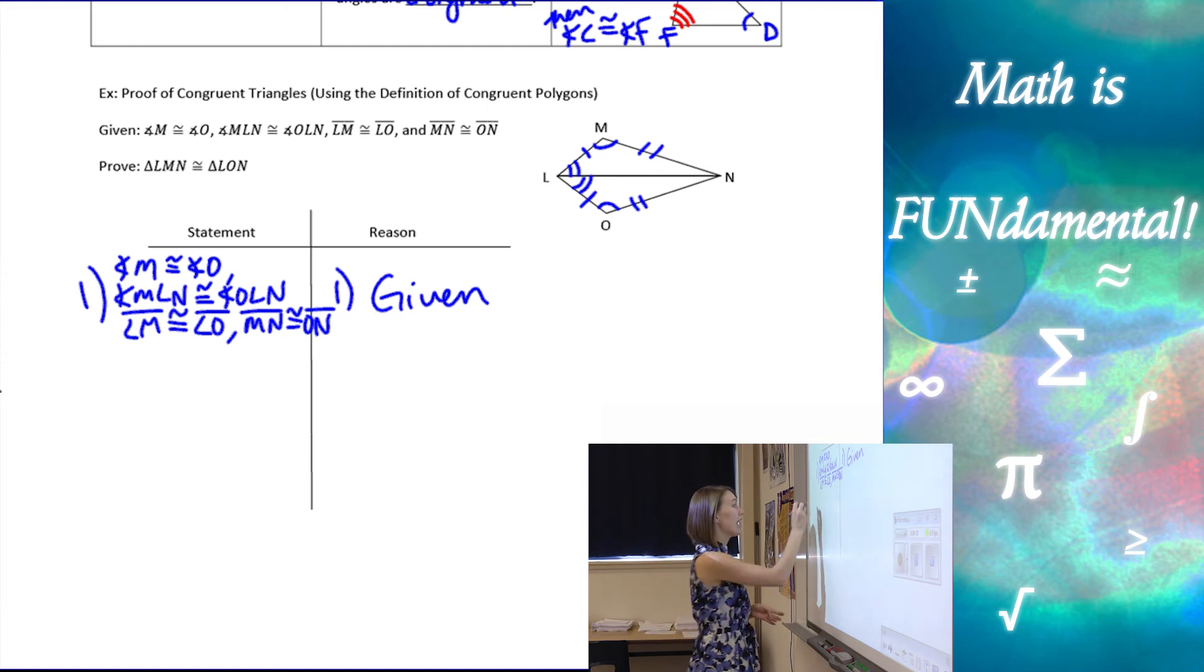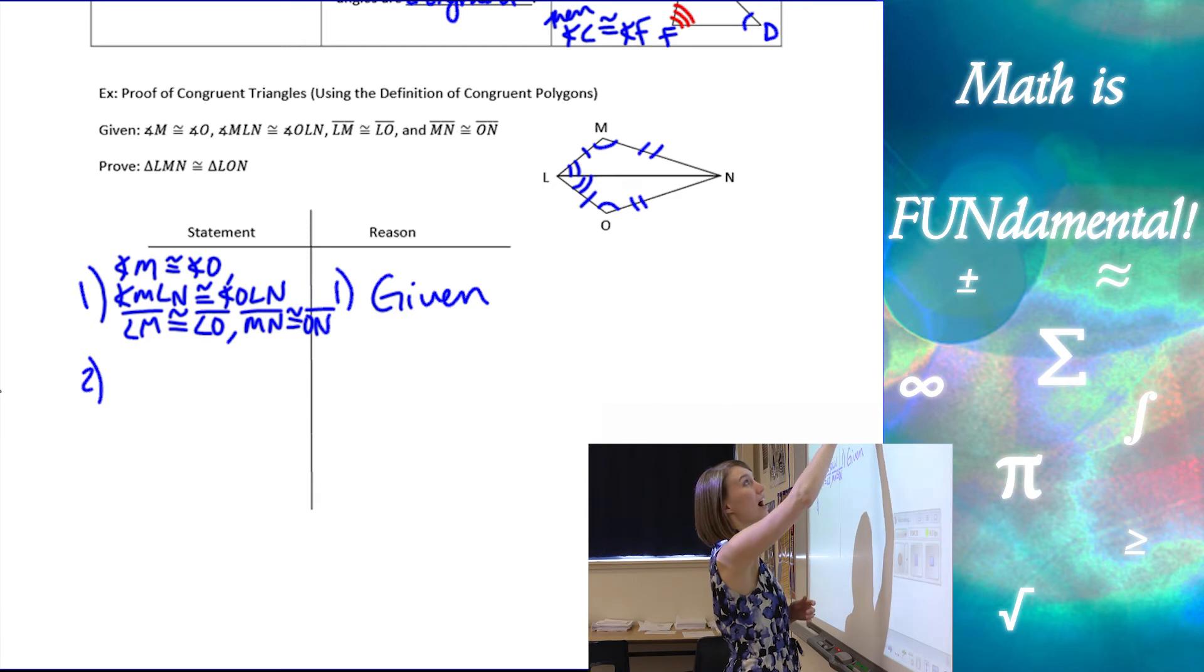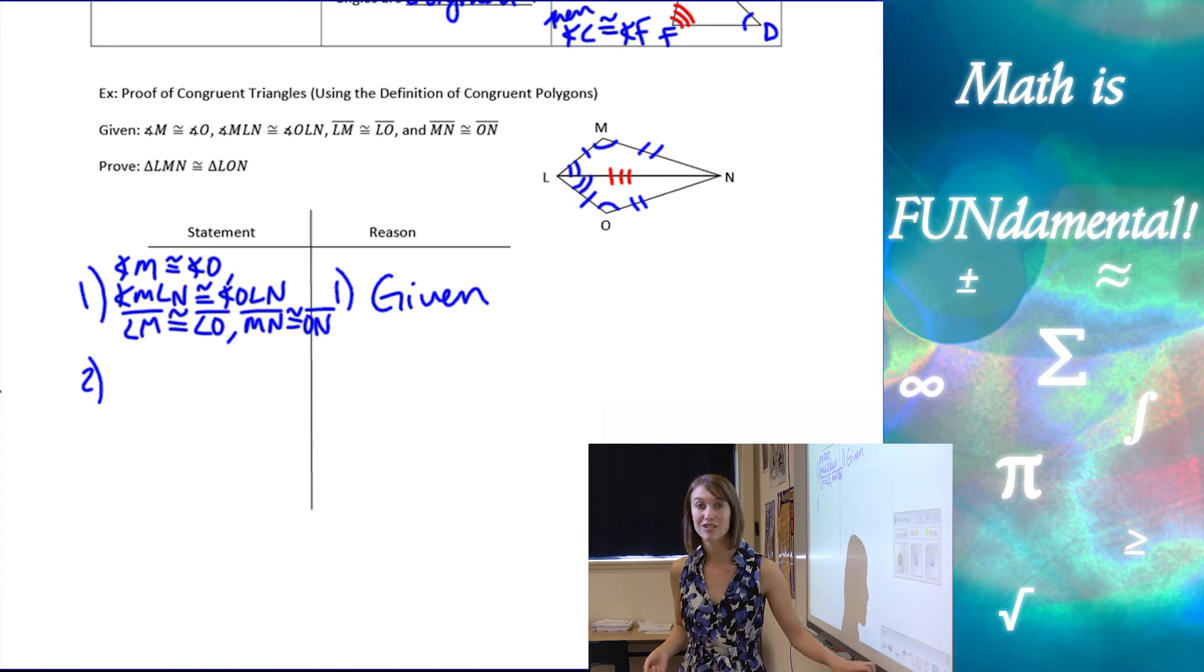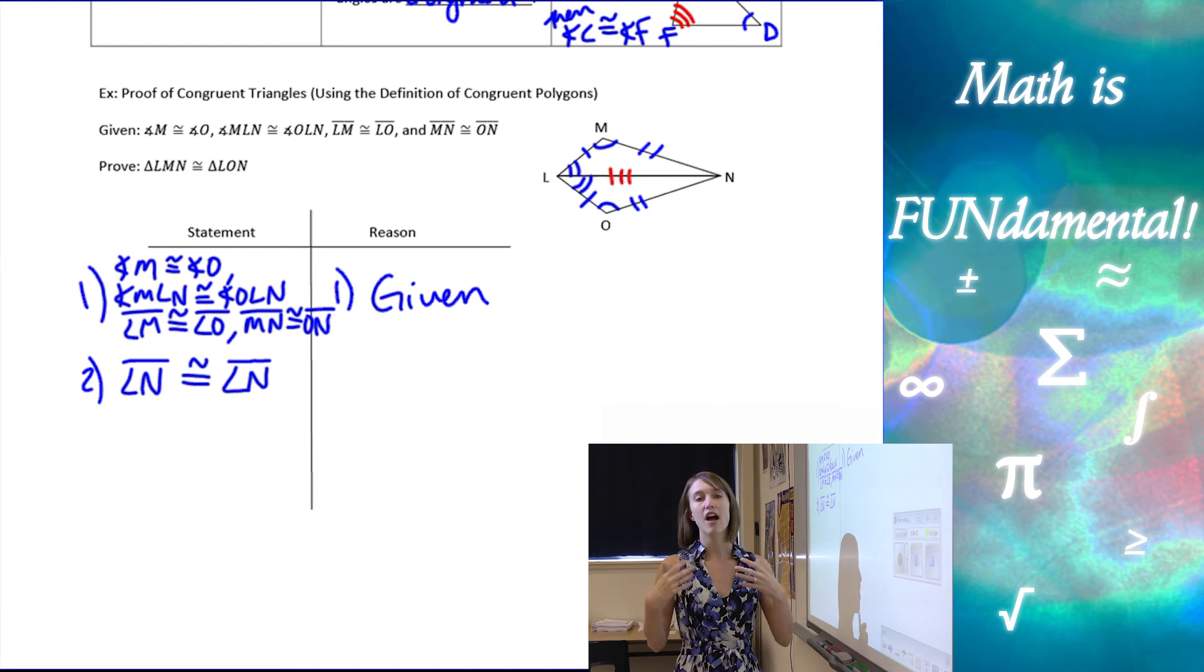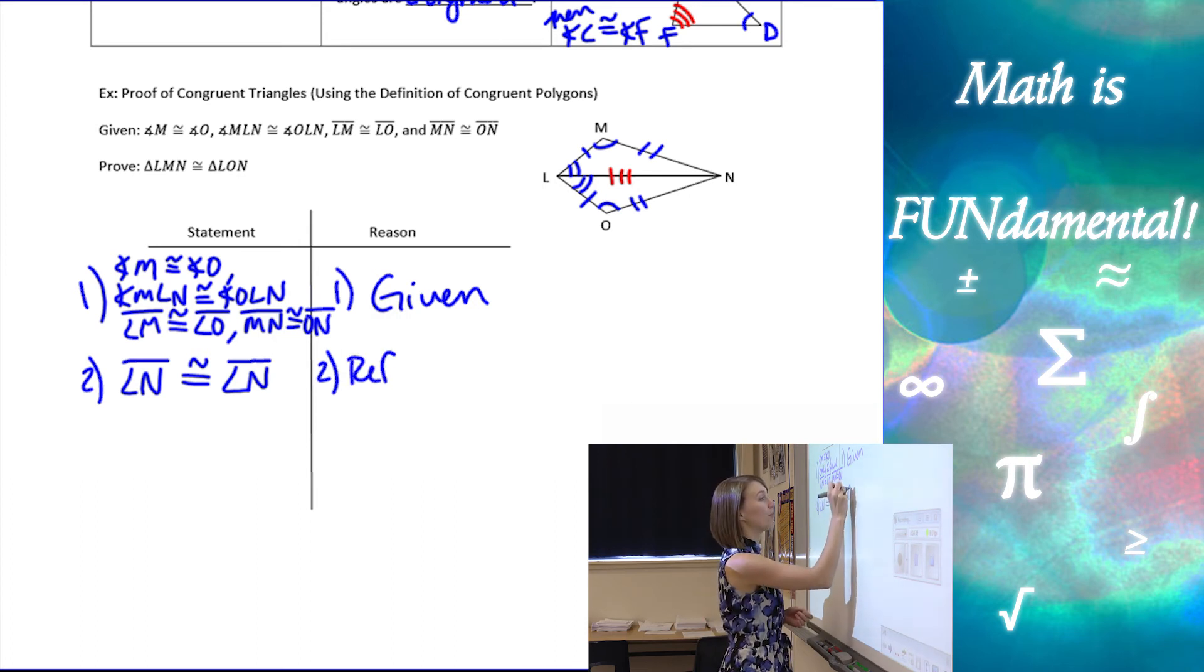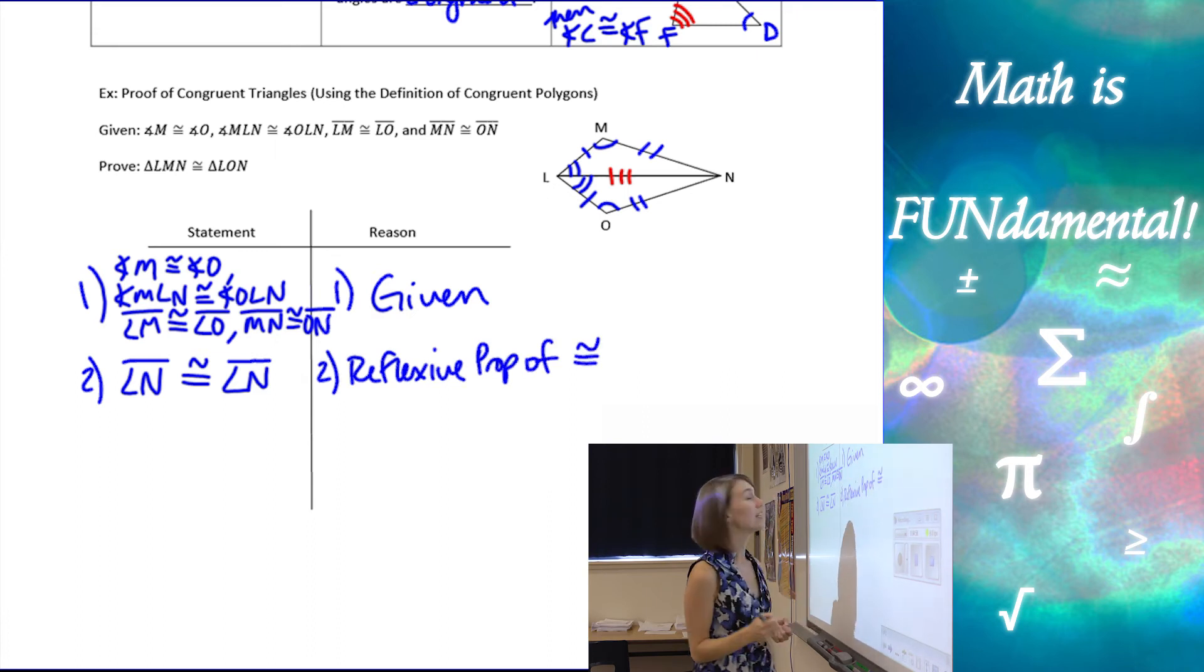Now we have to think—what else do we need? I need my third set of sides to be congruent. Let's do the sides first. I have two sets of sides; I need this set of sides to be congruent, and it's a shared side. We have a property that tells us that LN has to be congruent to itself. It's kind of silly to say LN is congruent to LN, but we need to show that third pair of sides, even though it's the same side. We call that the reflexive property of congruence.